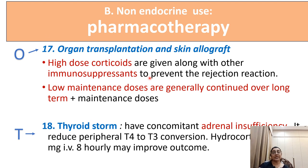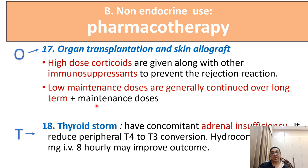In organ transplantation and skin allograft, high doses of corticosteroids are given along with other immunosuppressants to prevent rejection. Low maintenance doses are generally continued over a long period. In thyroid storm with concomitant adrenal insufficiency, corticosteroids reduce the peripheral conversion of T4 to T3; hydrocortisone given 8-hourly may produce a good outcome.